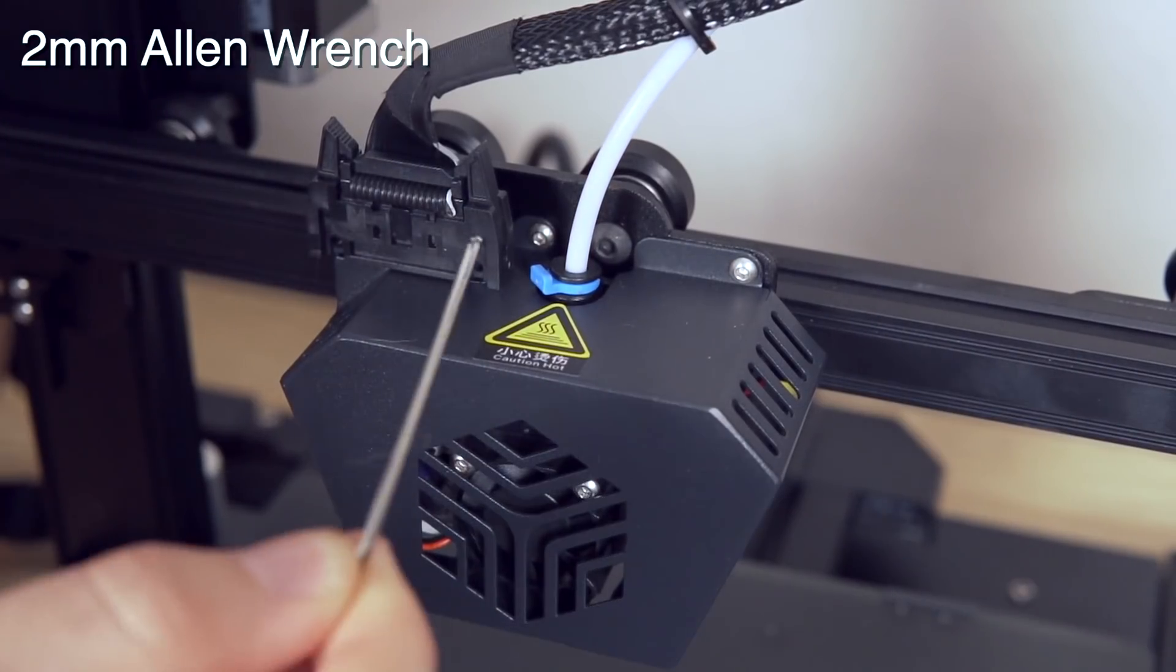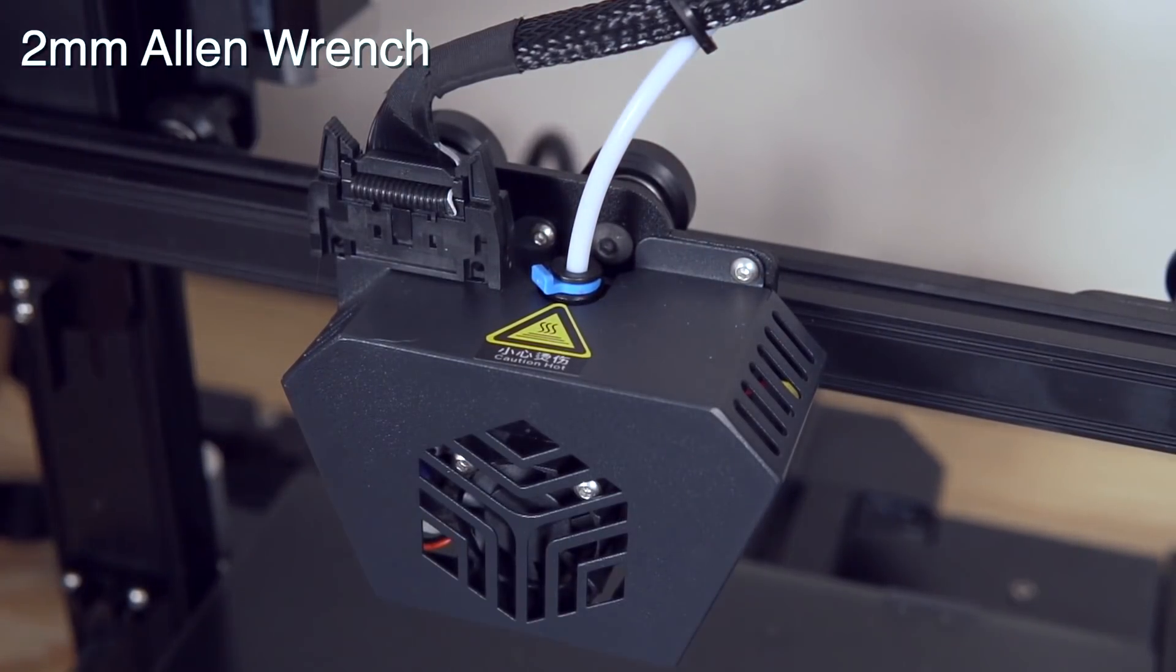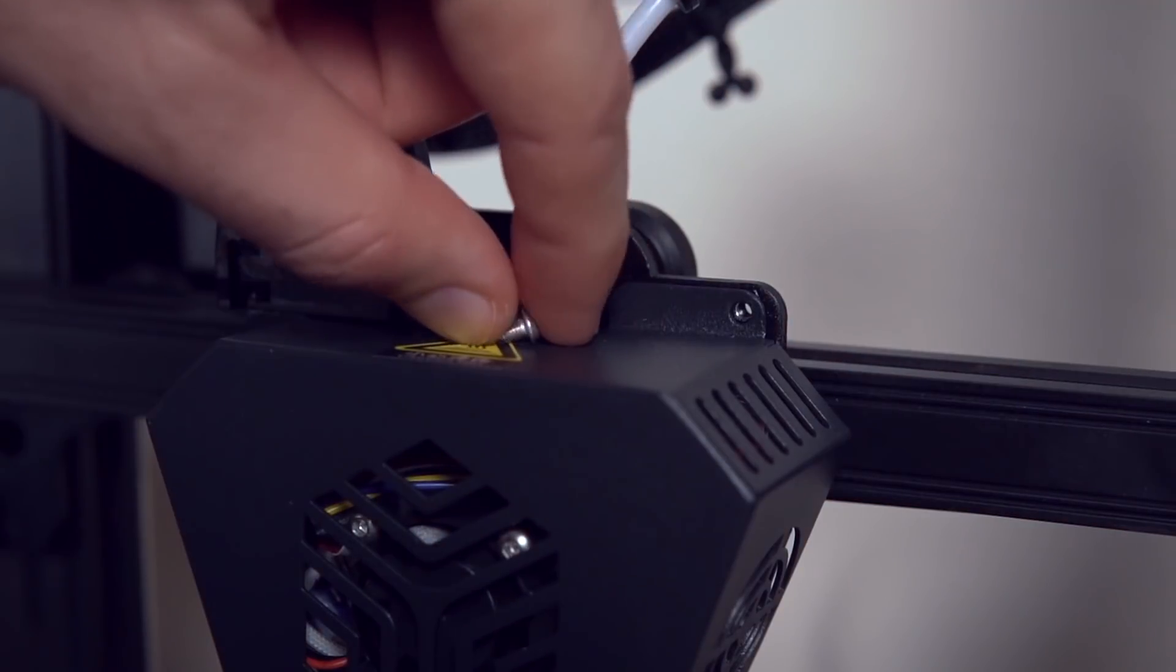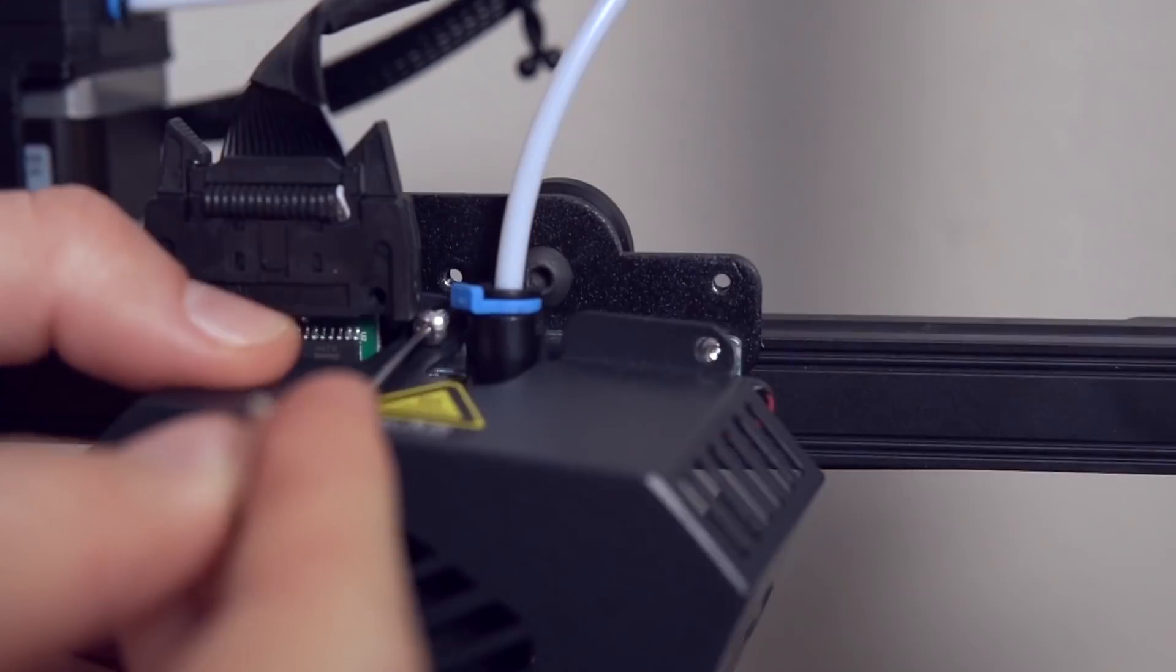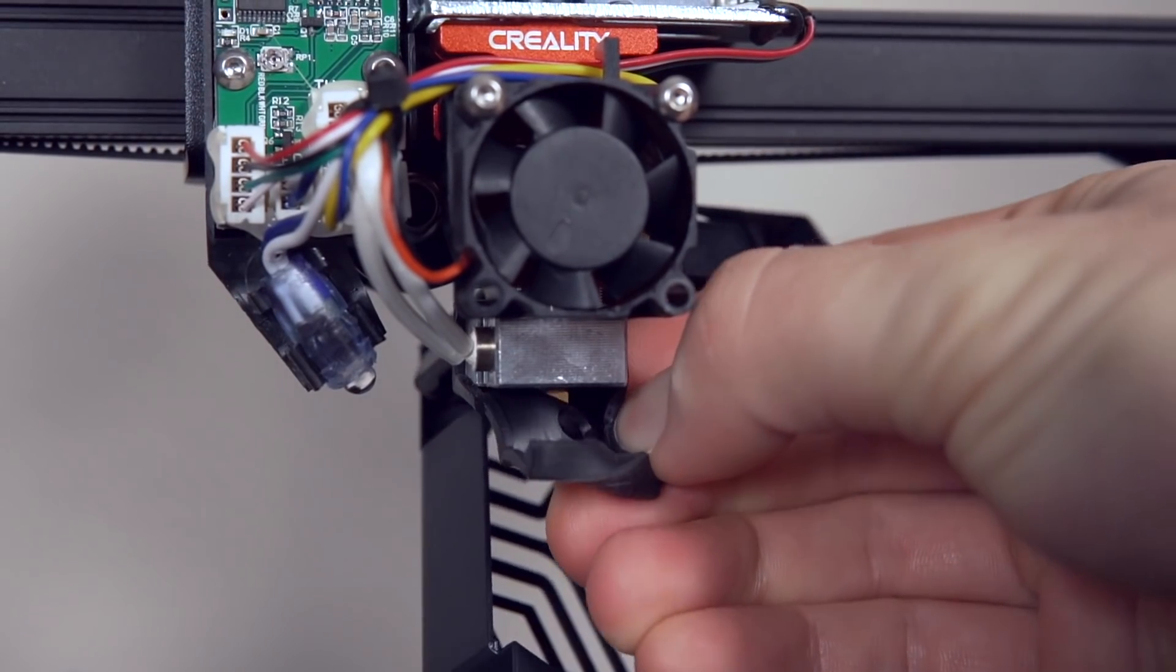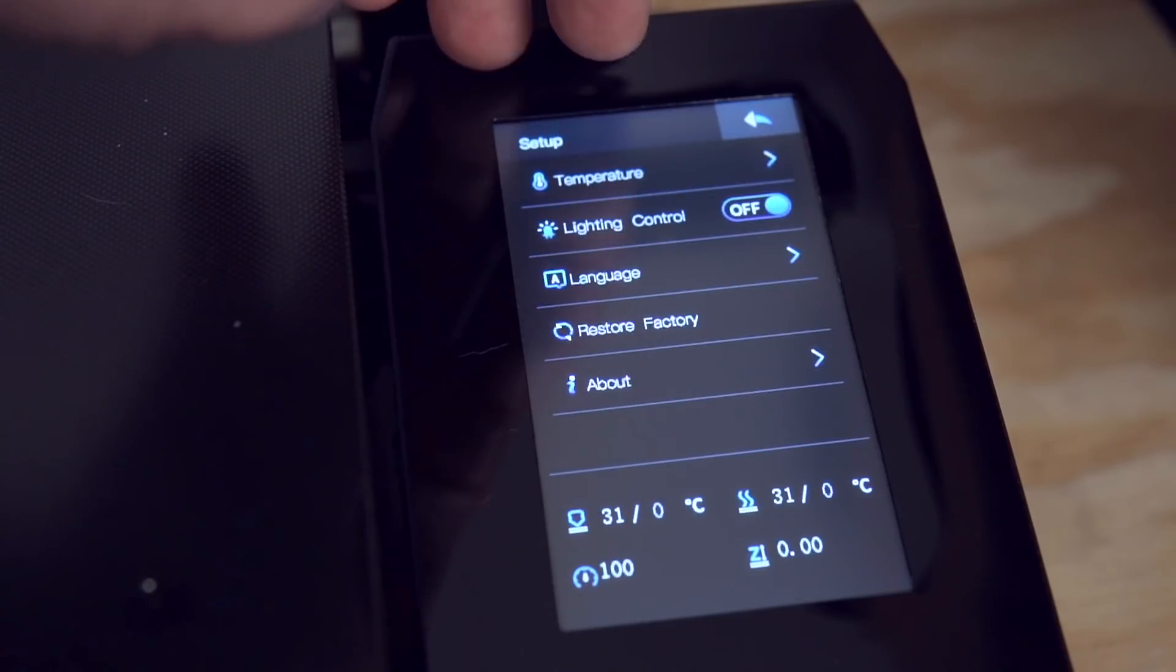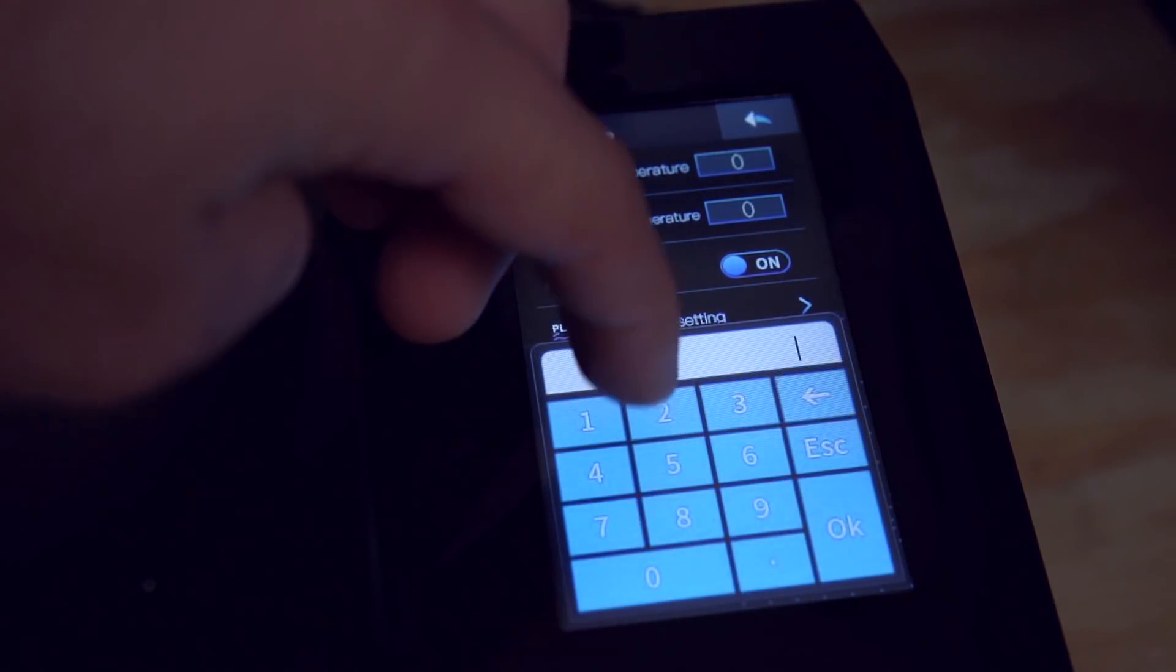First step will be to grab the 2mm Allen wrench and remove the two screws that are covering the fan shroud so that way we can get access to the hotend. I did want to note right away that all these screws coming off of the printer while we are removing the old hotend need to be held onto because we will be reusing all of them for the new install, so just make sure you put them somewhere where they're going to be safe. Once the fan shroud is removed, go ahead and remove the silicone sock.